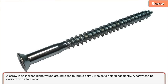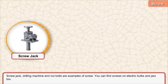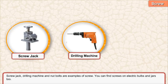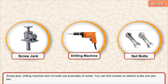Screw. A screw is an inclined plane wound around a rod to form a spiral. It helps to hold things tightly. A screw can be easily driven into wood. Screw jack, drilling machine, and nut bolts are examples of screws. You can find screws on electric bulbs and jars too.